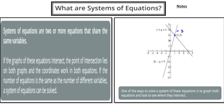Since this is the point that both graphs share, it's a solution to both equations. Let me prove it. I'll take the first equation: x plus y equals four, and substitute one for x and three for y. One plus three equals four — so the solution (1, 3) satisfies this first equation.